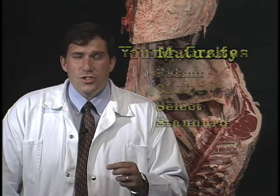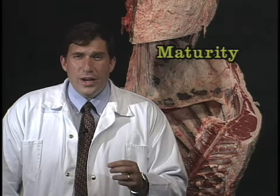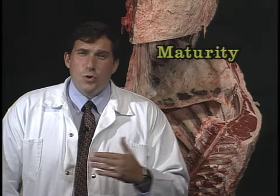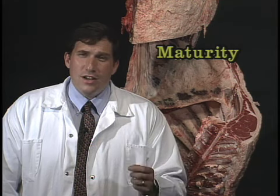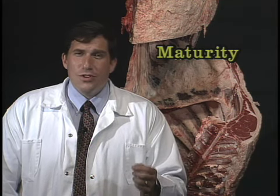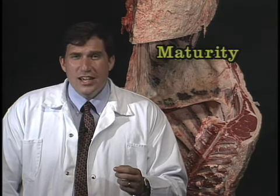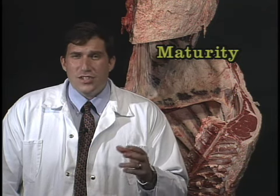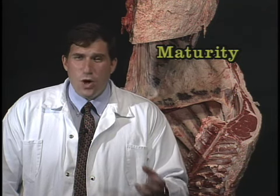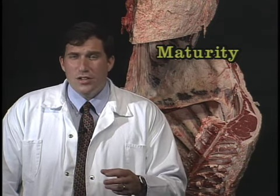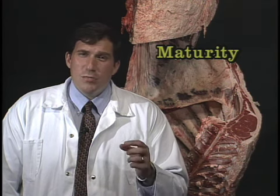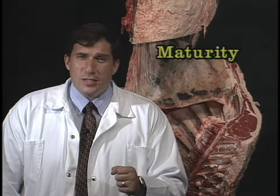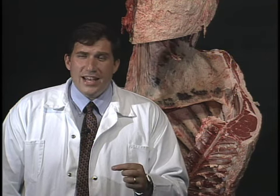How do we determine maturity? A grader will stand on a grading chain in a packing plant and carcasses will pass by at about the rate of one every 10 to 12 seconds. He has to look at the carcass to determine a host of different factors that evaluate the quality grade and yield grade of the animal, and for maturity in particular, he needs something he can grasp very quickly to determine the age of that animal.